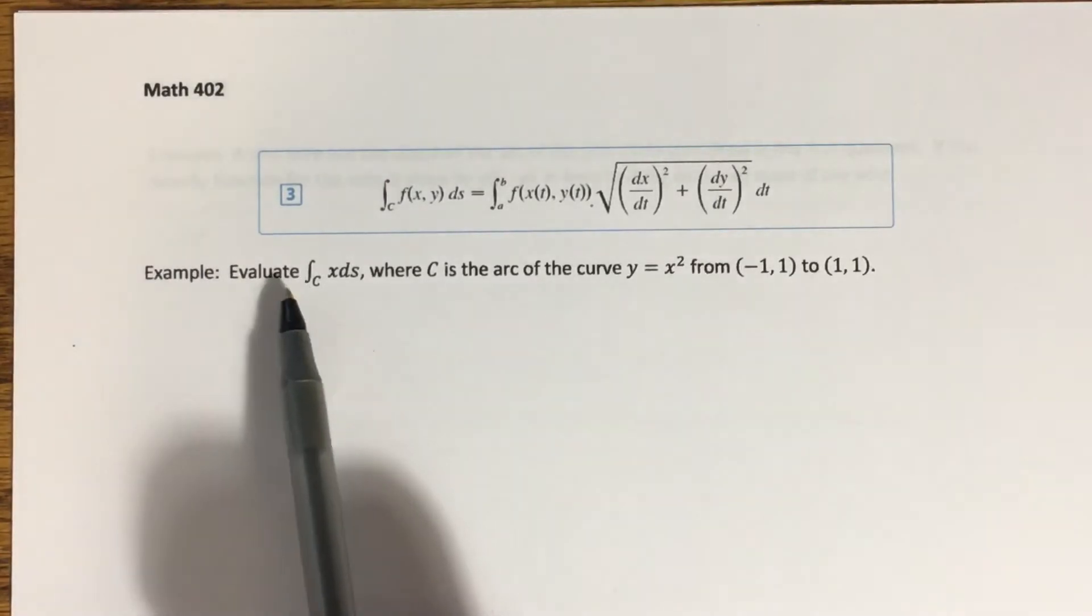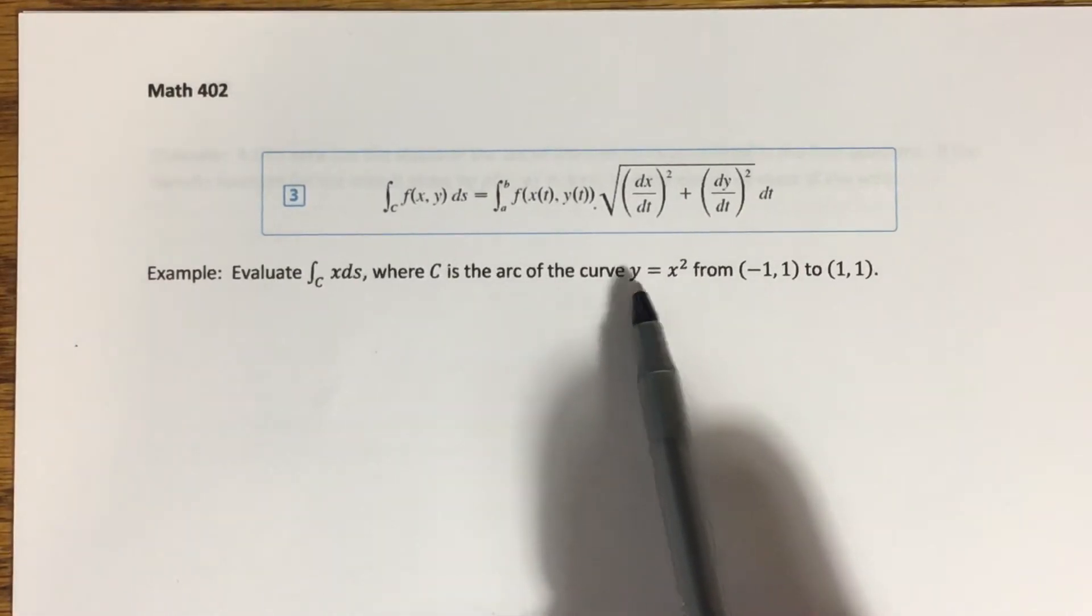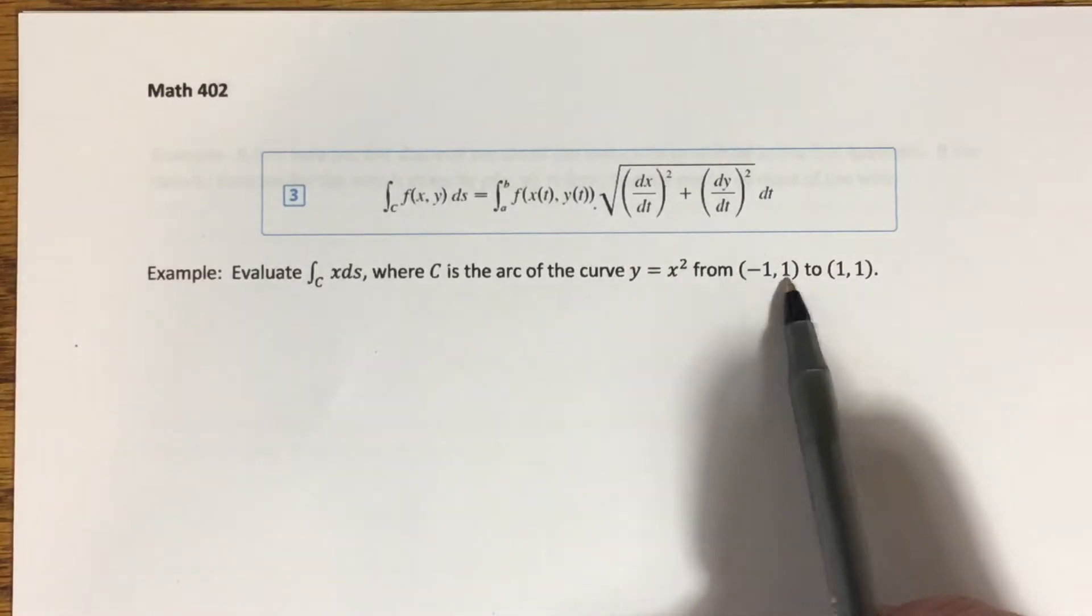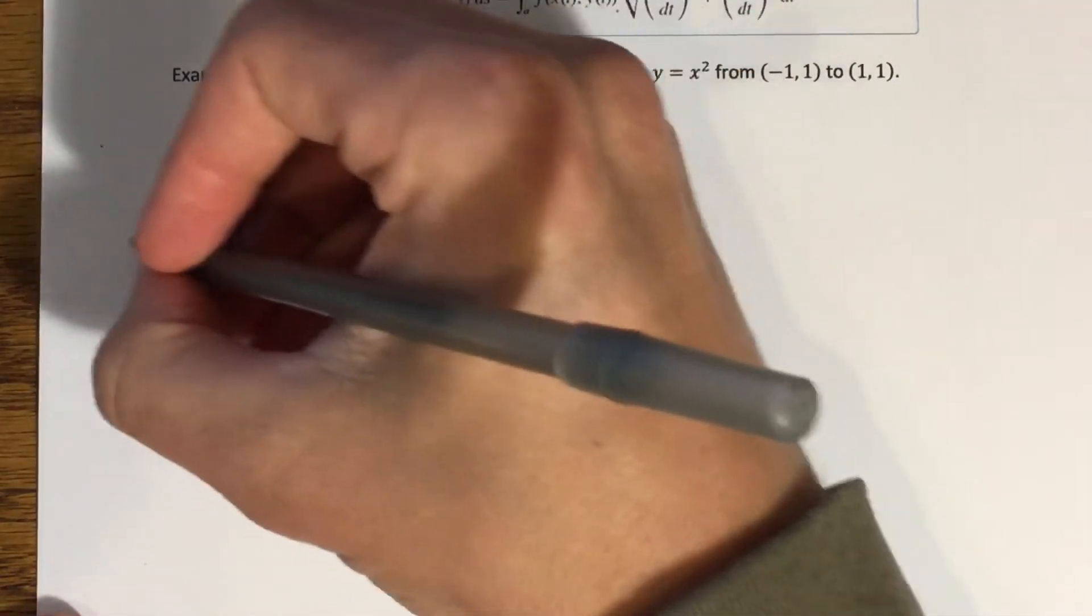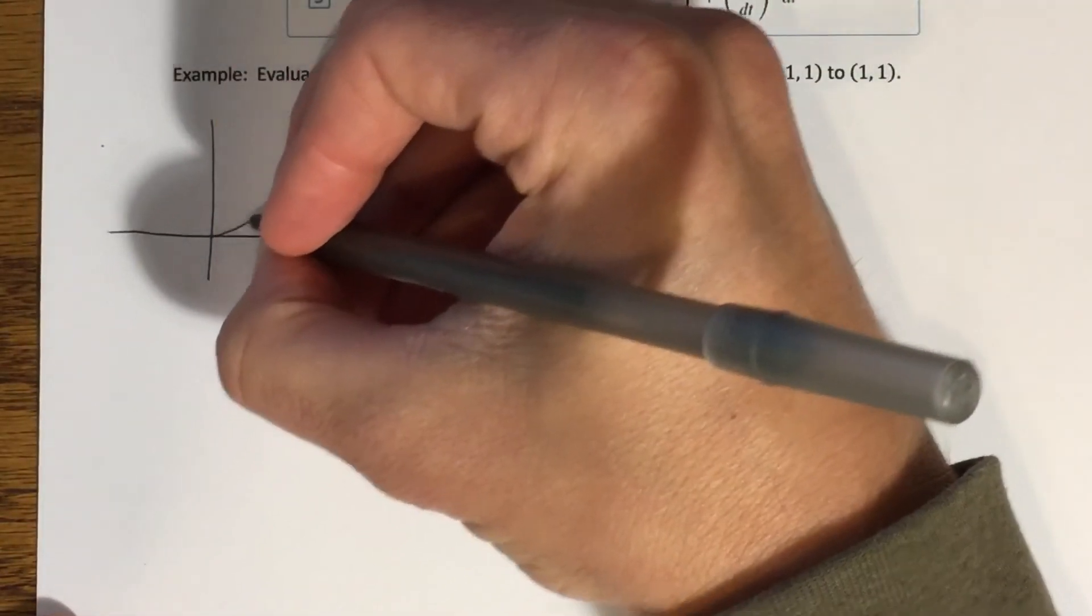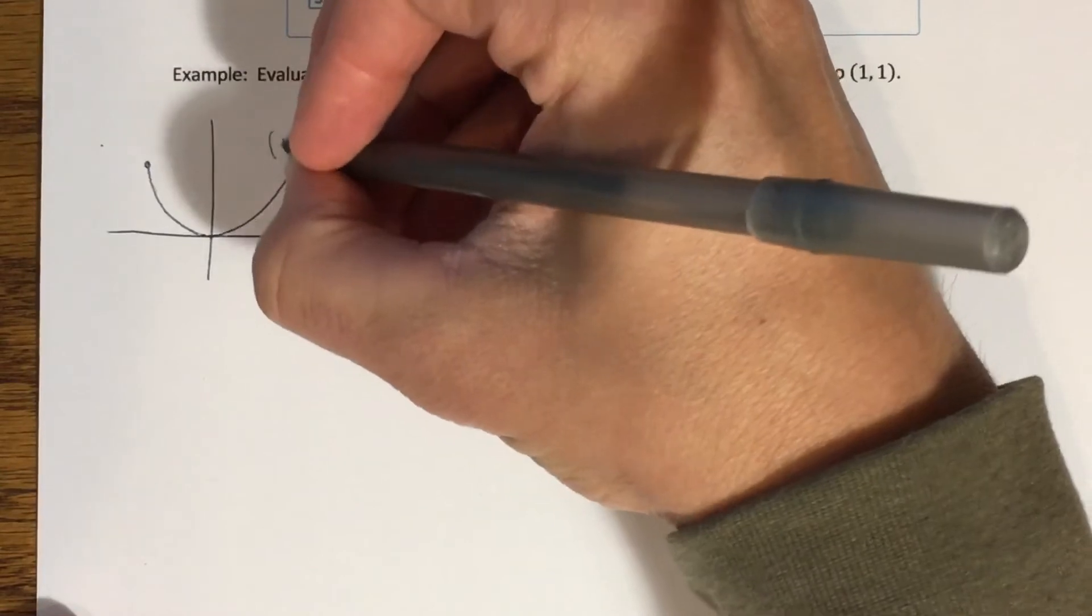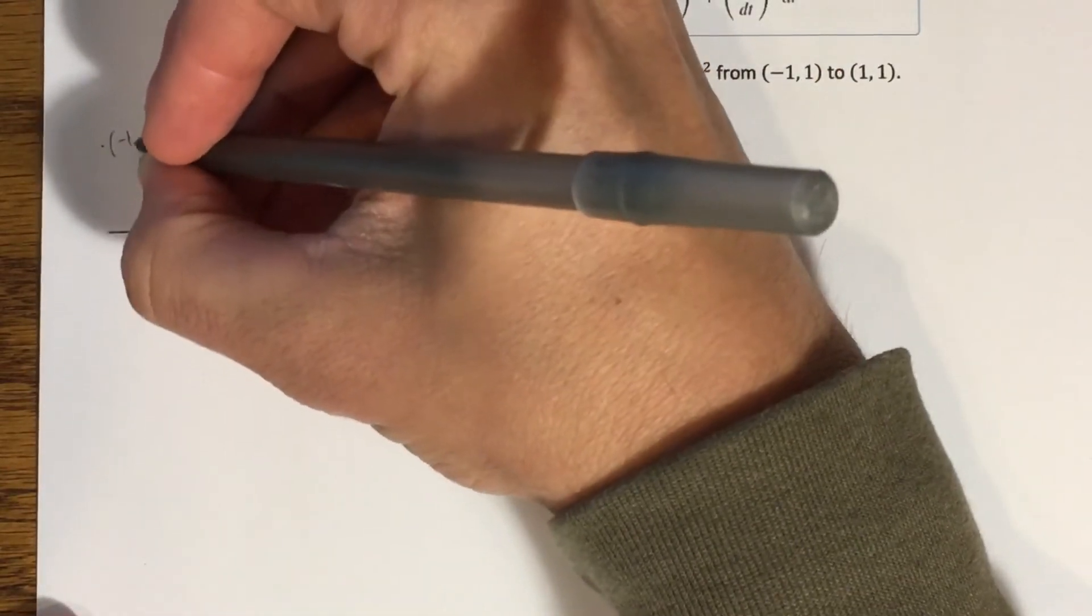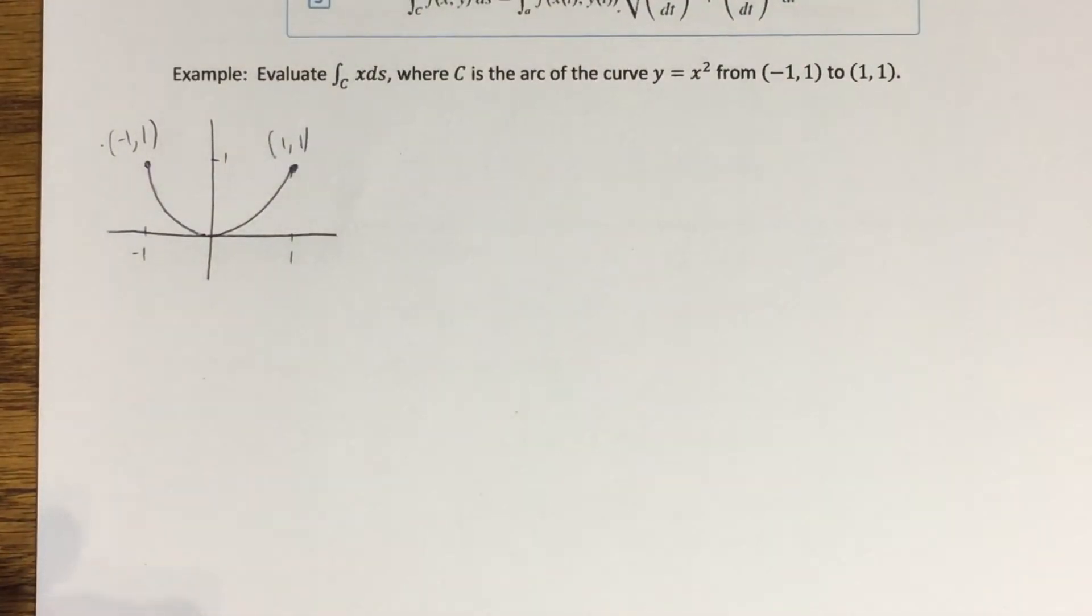So let's start with this example. We want to evaluate the line integral of x ds along the curve c, where c is described this way. It's the arc of the curve or the parabola y equals x squared from the point negative 1, 1 to positive 1, 1. It's generally a good idea to sketch the curve before you do anything else. So it's a parabola. This is the point 1, 1. This is the point negative 1, 1. Put in some labels here.